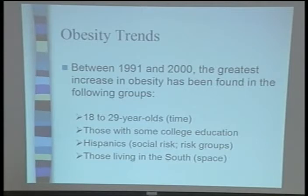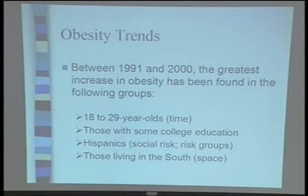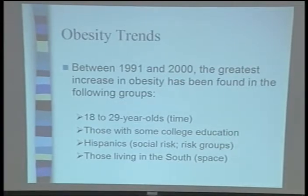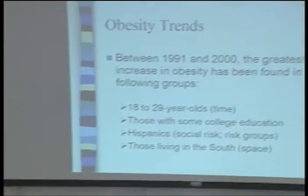And finally, those living in the South. So here we see examples of specific age groups, the element of time and life course epidemiology, the issue of geographic space, and also socioeconomic status and other social factors implicated in the social determinants of health — in this case, obesity.